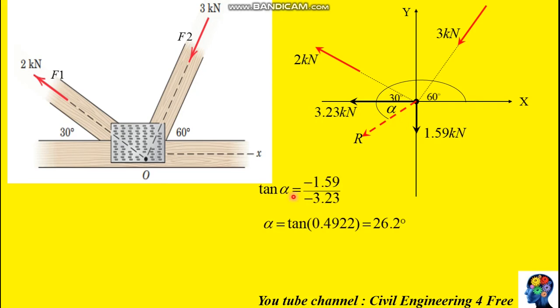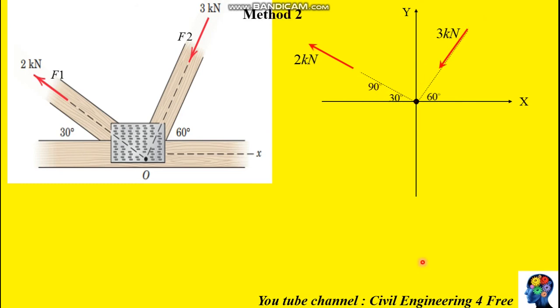Using tan, tan alpha will be minus 1.59, which is the opposite, divided by the adjacent, minus 3.23. And tan inverse of this value will give us 26.2 degrees. Finally, theta x will be the sum of alpha plus 180 degrees, since this is a straight line making 180 degrees. So theta x will be 206.2 degrees.